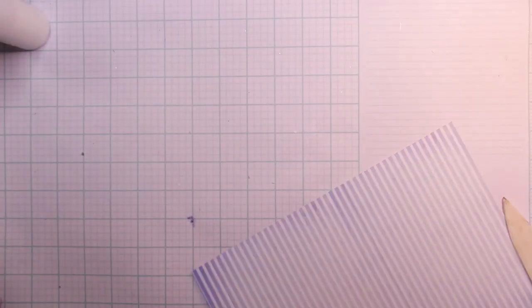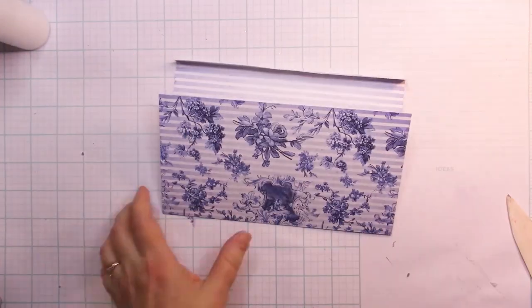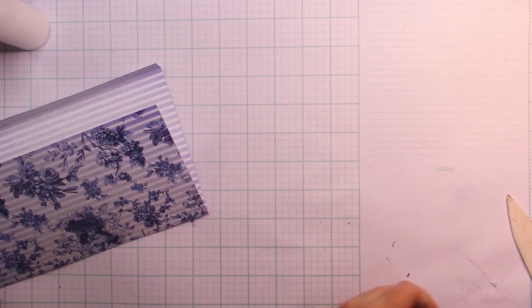So in case I didn't mention it, you do want to print both sides of your paper. Pick the side that you like most for the outside and go ahead and fold those edges in.